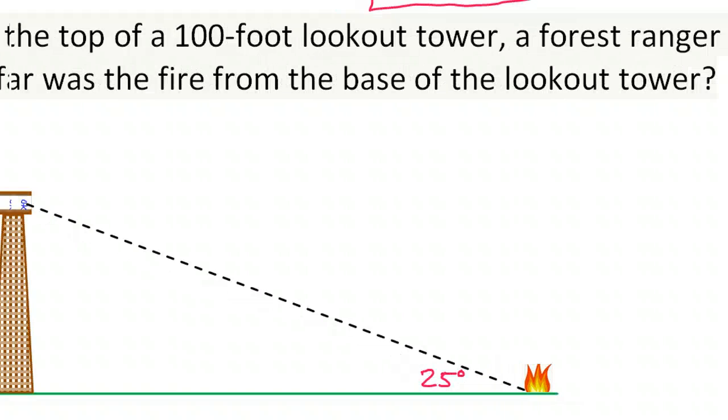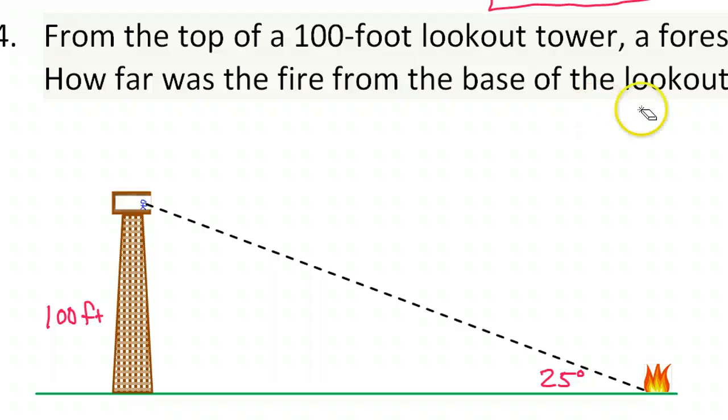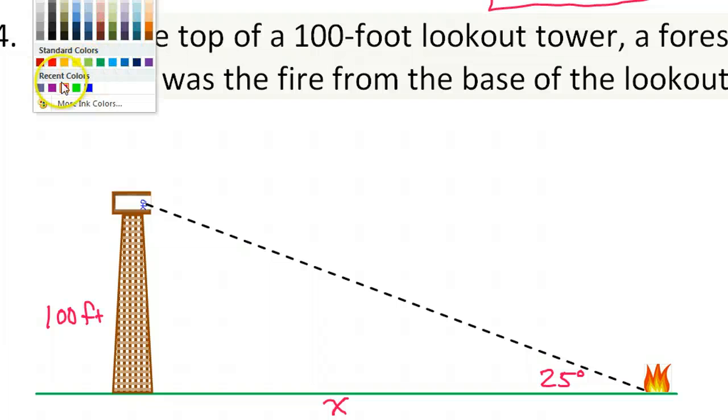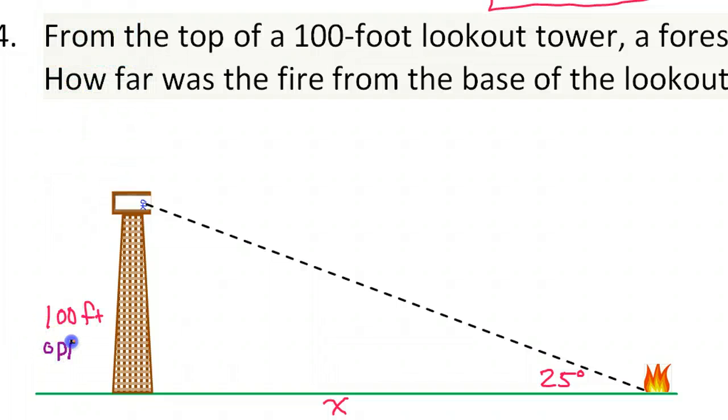So what are we trying to find? How far was the fire from the base of the lookout tower? The base of the tower, that's the bottom of the tower. So we're being asked to find this distance right here from the fire to the bottom of the tower. So looking at the 25 degrees and the x and the 100, which trig function are we dealing with? Well, this is opposite from the 25 and this is adjacent. So opposite over adjacent, that is the tangent function.